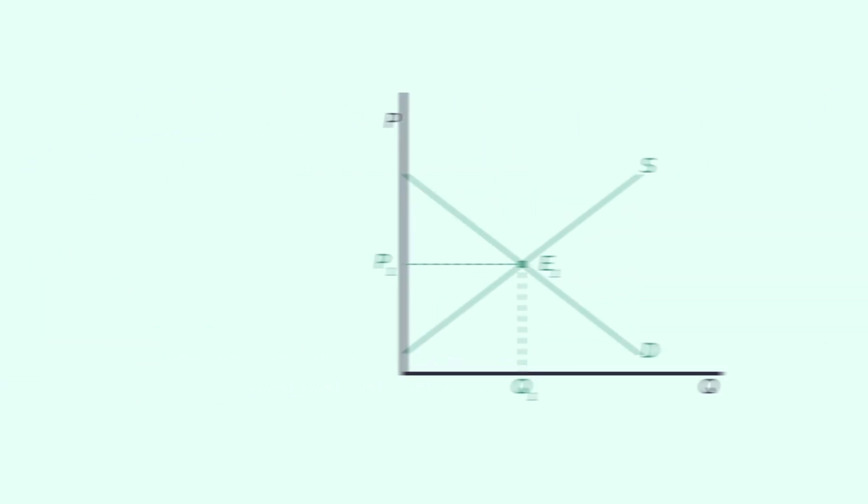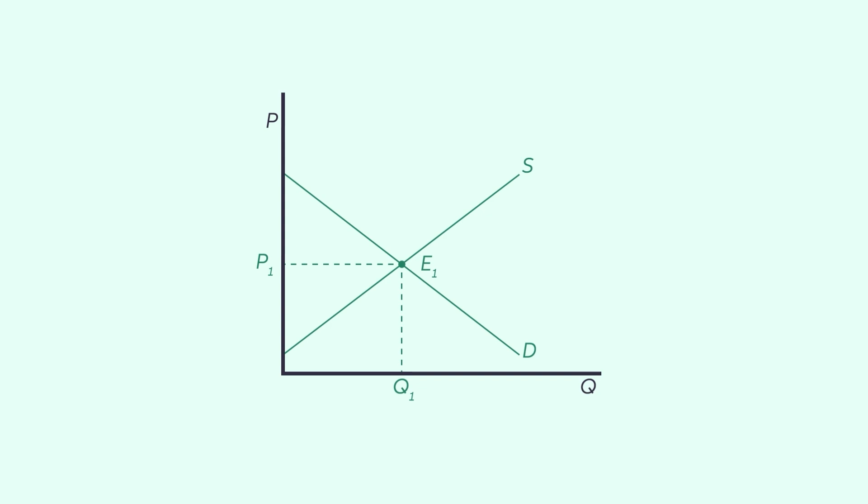On the contrary, an increase in supply causes a rightward shift of the supply curve to S3. And as the graph shows, this results in a lower equilibrium price and a higher equilibrium quantity.